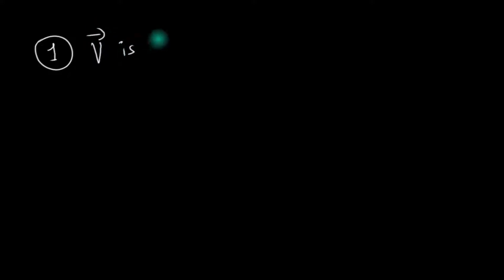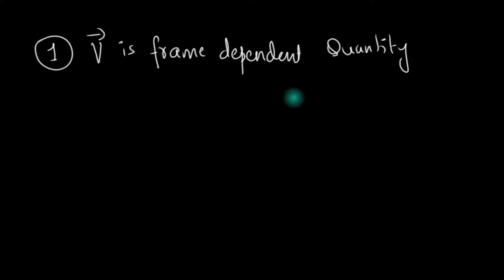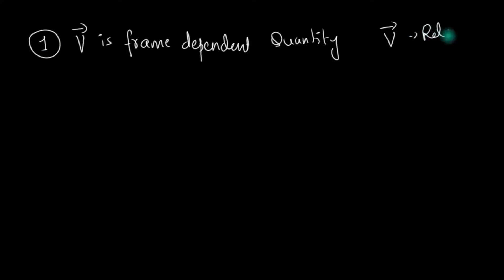The first thing to understand about Newton's laws is that velocity is a frame-dependent quantity. This means different inertial observers are going to find different values of velocity for different particles, and that's okay. V is a relative quantity, and that's fine.